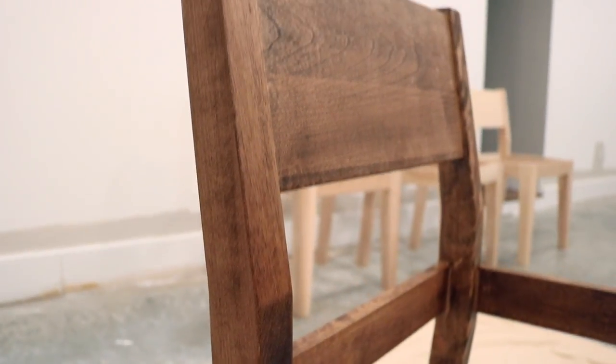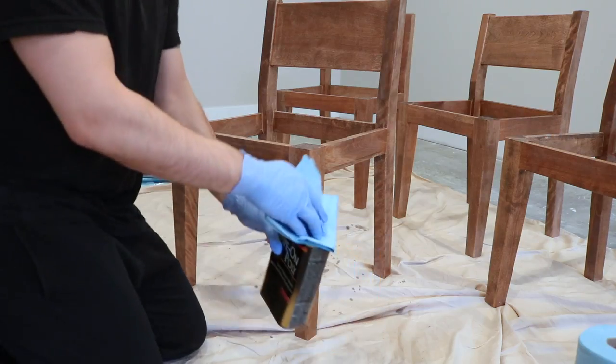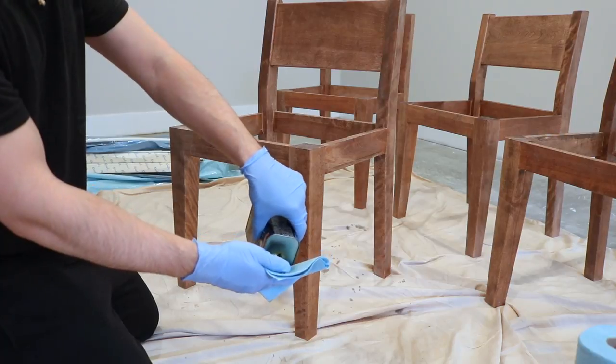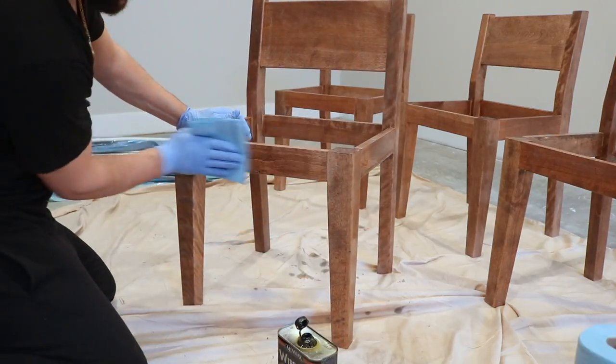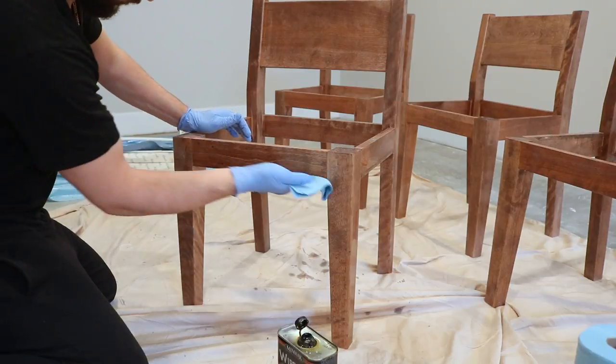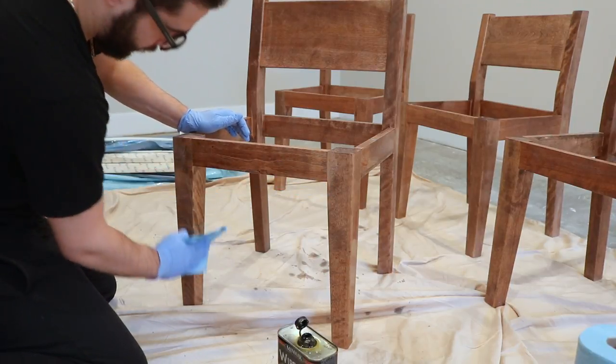To finish them, I applied four coats of Satin Wipe-on Poly. I applied two coats, then sanded with 600 grit before applying the third coat. Once the third coat was dry, I sanded with 1000 grit before applying the final coat.